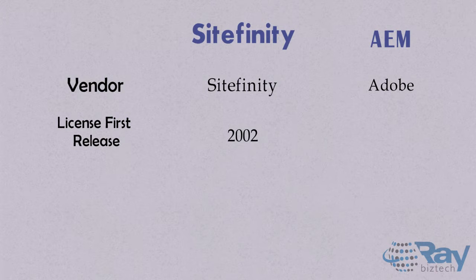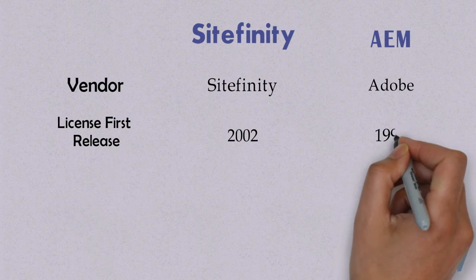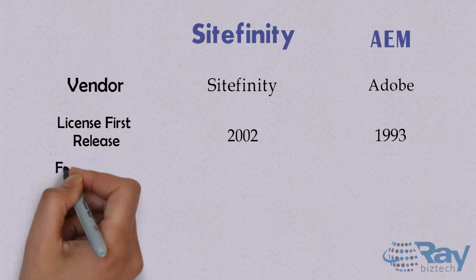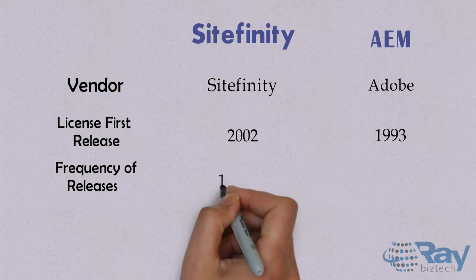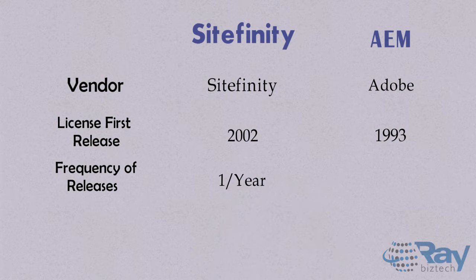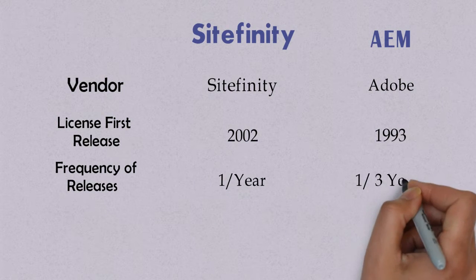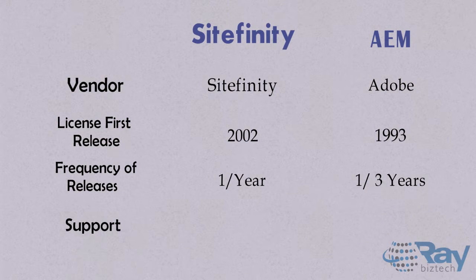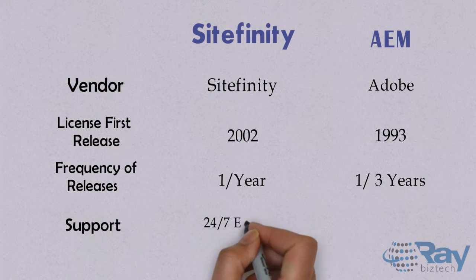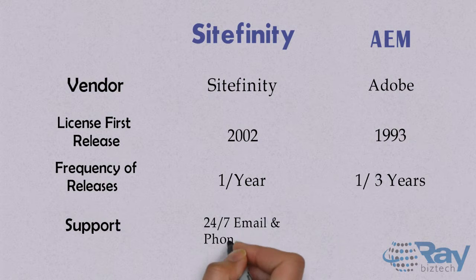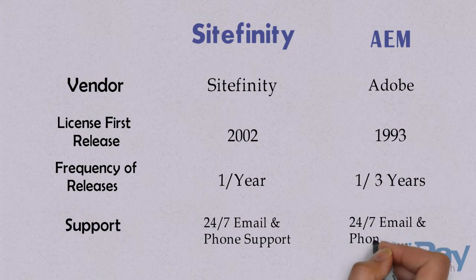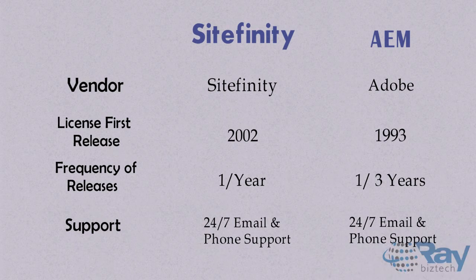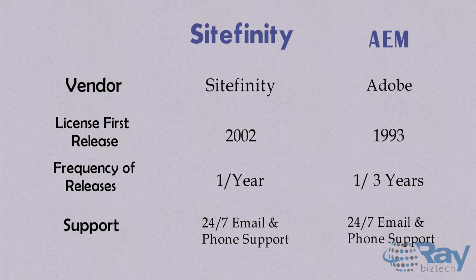The license first release is in 2002 for Sitefinity and in 1993 for Adobe Experience Manager. Frequency of releases is 1 per year for Sitefinity and 1 per 3 years for Adobe Experience Manager. Support is 24x7 email and phone support for both Sitefinity and Adobe Experience Manager.